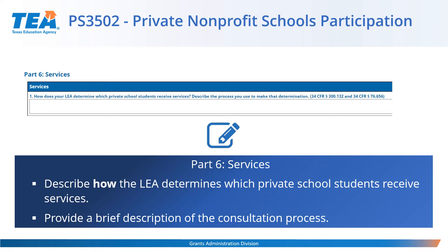In Part 6, Services, the grantee must describe how they determine which private school students receive services and provide a brief description of the consultation process. For example, the grantee can state that they met with private schools and determined that speech services were the greatest need, and because of their consultation process, they serve private school students that need speech services.